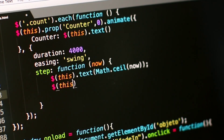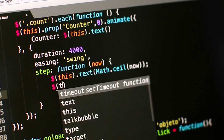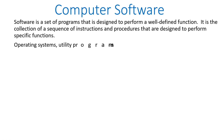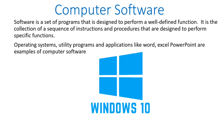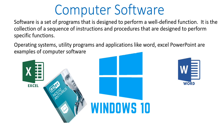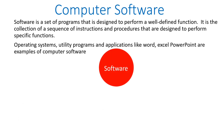Operating systems like Windows 10 or Windows 11, utility programs like antivirus software or backup software, and applications like Word, Excel, PowerPoint, and browsing software like Google Chrome are some examples of computer software. Computer software is further categorized into two types: system software and application software.